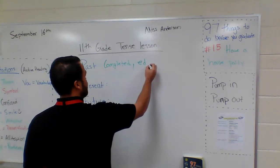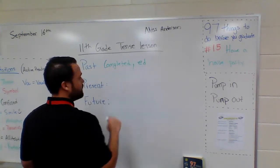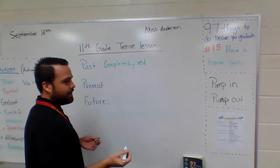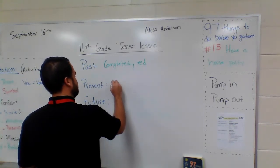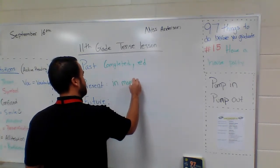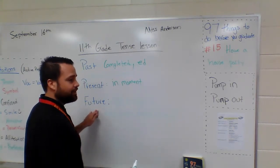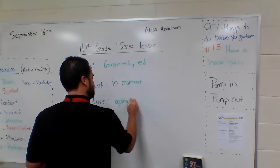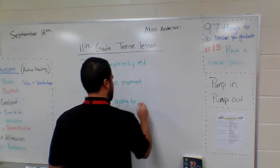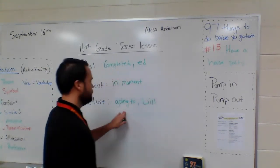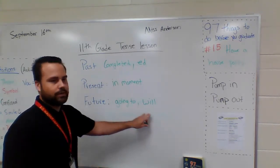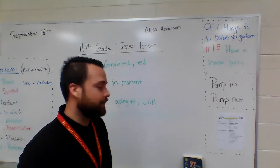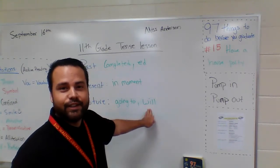Sometimes there are irregular verbs for the past tense, and we'll talk about those in just a moment. The present tense is something that is in the moment or happening right now. Future tense is pretty straightforward — it's going to happen or will happen. Those two words, 'going to' and 'will,' are always the perfect way to identify future tense. If you see those, unless it's referring to the name Will, then you know we're in the future tense.